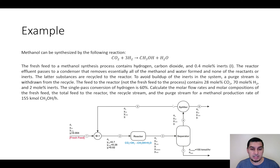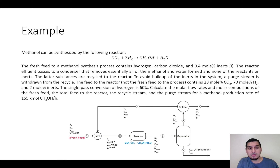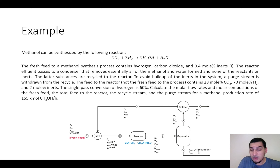Since the top stream contains some inerts, to avoid accumulation of inerts in the recycle stream, part of it is purged and the rest is recycled to the mixer. We know that the feed to the reactor contains 70% hydrogen, 28% carbon dioxide, and the rest is inert, and the single pass conversion of hydrogen is 60%. We want to calculate all the flow rates and compositions of all the streams in order to produce 155 kilomoles per hour of pure methanol.